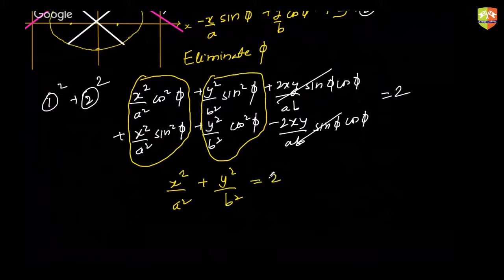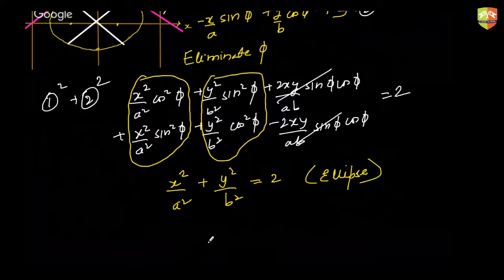The result equals 2, giving us another ellipse. So the locus of the point of intersection of tangents drawn at the two ends of a pair of conjugate diameters is an ellipse of the form x²/a² + y²/b² = 2.